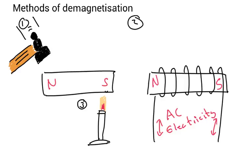Methods of demagnetization. Here I've got three different methods that you can demagnetize a magnet. You can give it a really good whack with a hammer. You can put it in a solenoid again, but this time you have AC electricity running through it. Or, if you get it very, very hot, that will actually demagnetize the magnet as well.